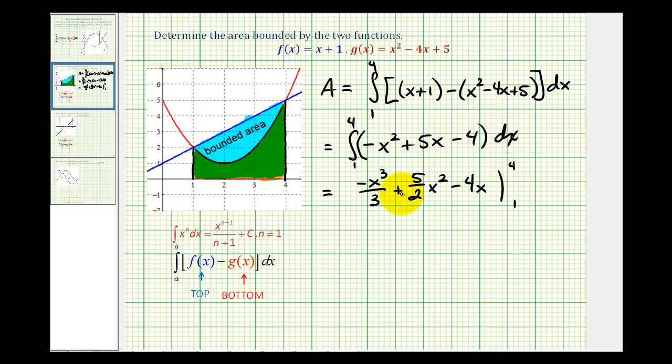So now we'll substitute 4 for x, and then 1 for x, and then determine the difference. So we'll have negative 4 cubed divided by 3 plus 5 halves times 4 squared minus 4 times 4 minus, replacing x with 1, we'll have negative 1 to the third divided by 3 plus 5 halves times 1 squared minus 4 times 1.